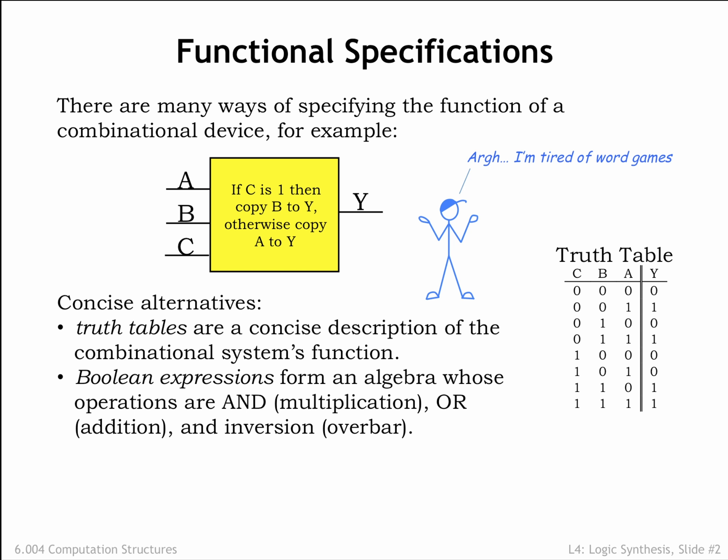In the example shown here, the device has 3 inputs, each of which can have the value 0 or 1. There are 2 times 2 times 2 equals 2 to the 3rd, or 8 combinations of the 3 input values, so there are 8 rows in the truth table.